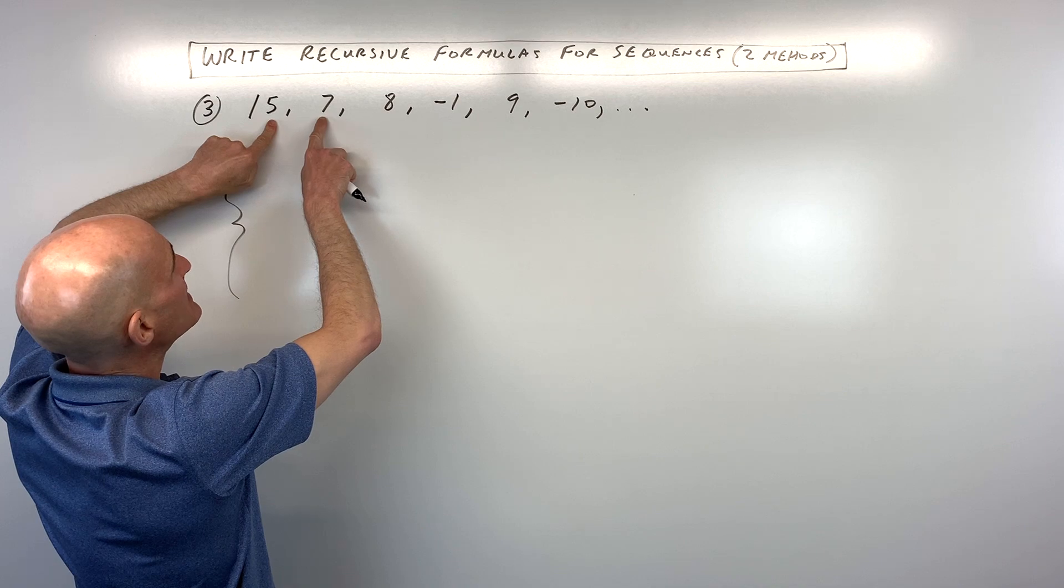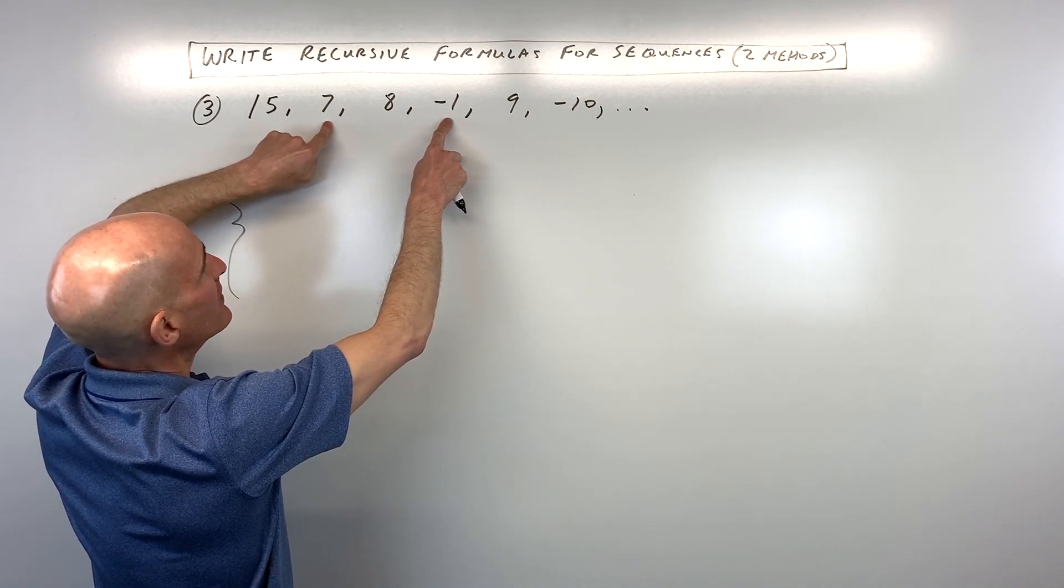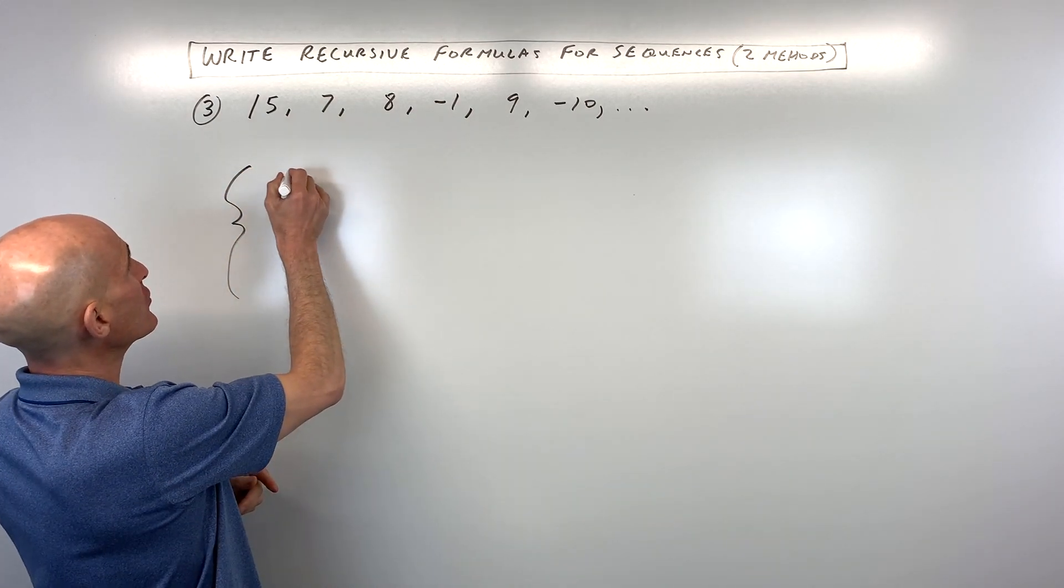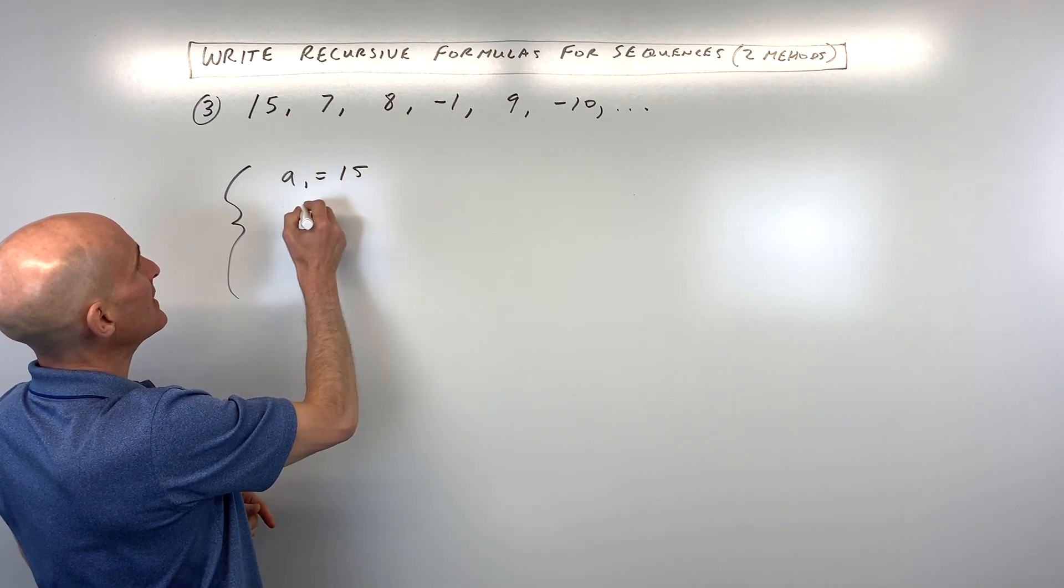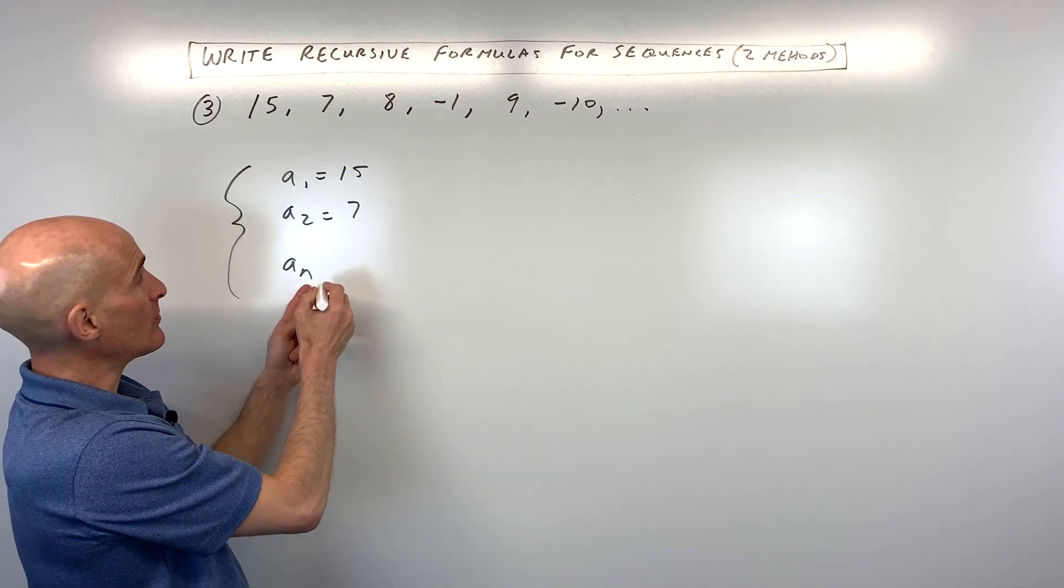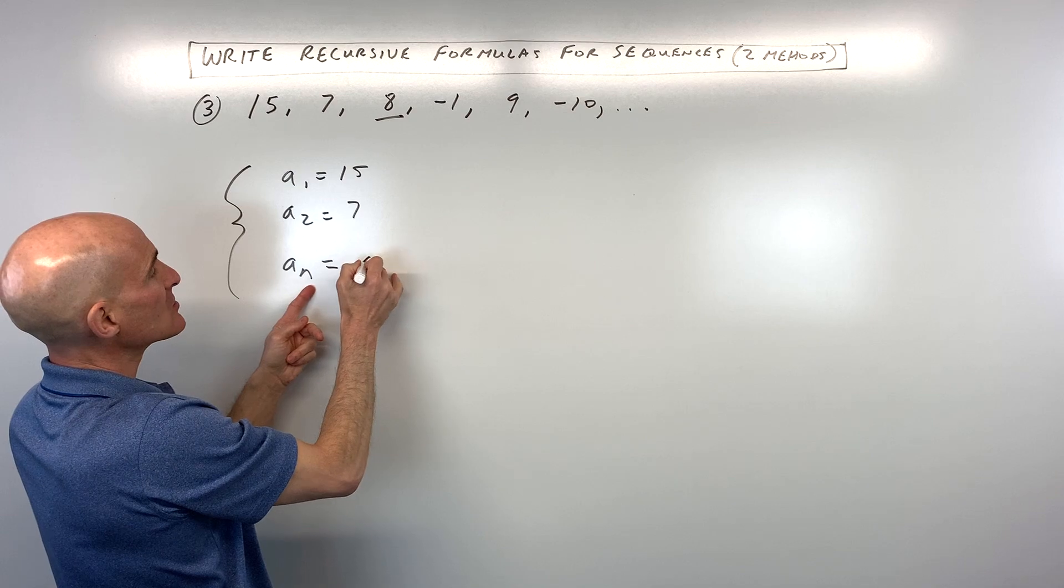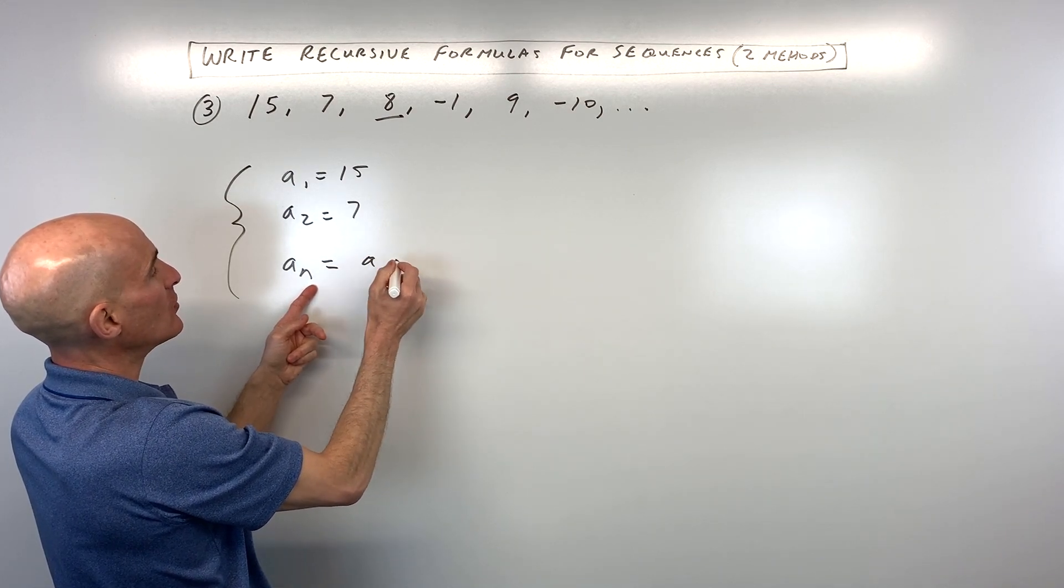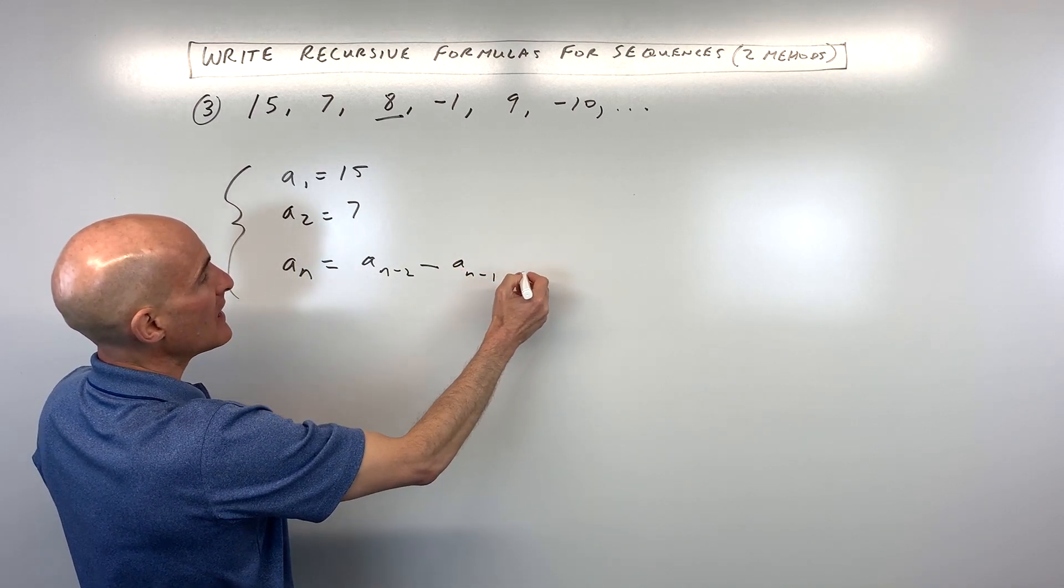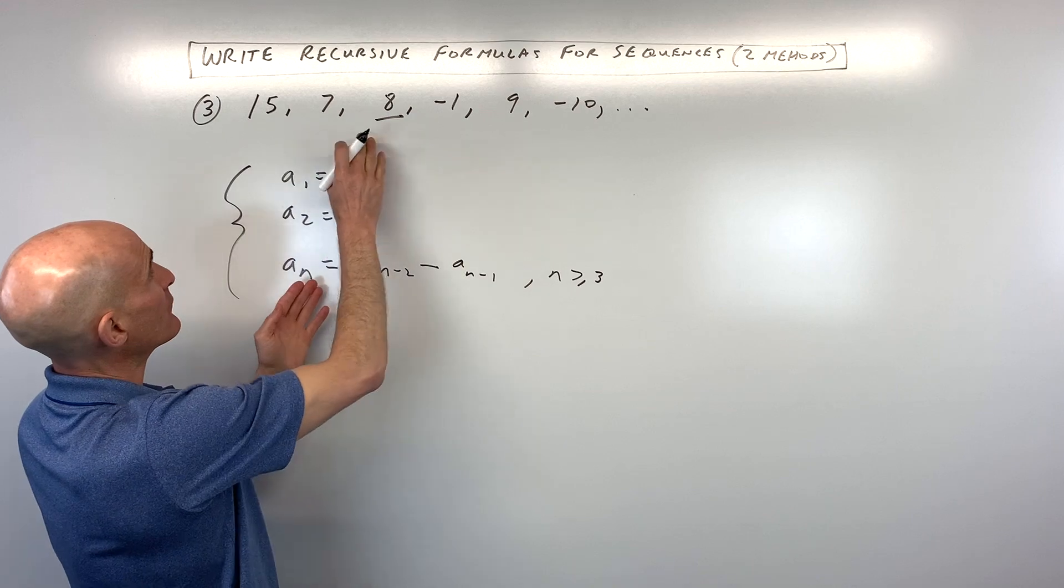Well, see if you can follow this pattern. It looks like 15 minus 7, that's 8. 7 minus 8, that's negative 1. 8 minus a negative 1, that's 9. So you see what's happening here? The first term we know is 15. The second term we know is 7. But to get to the nth term, let's say, for example, this one here, we're going to go 2 back. So it's a sub n minus 2, and we're going to subtract the one that's just 1 before it, n minus 1. And that's going to be for n greater than or equal to 3, meaning for the third term and beyond.